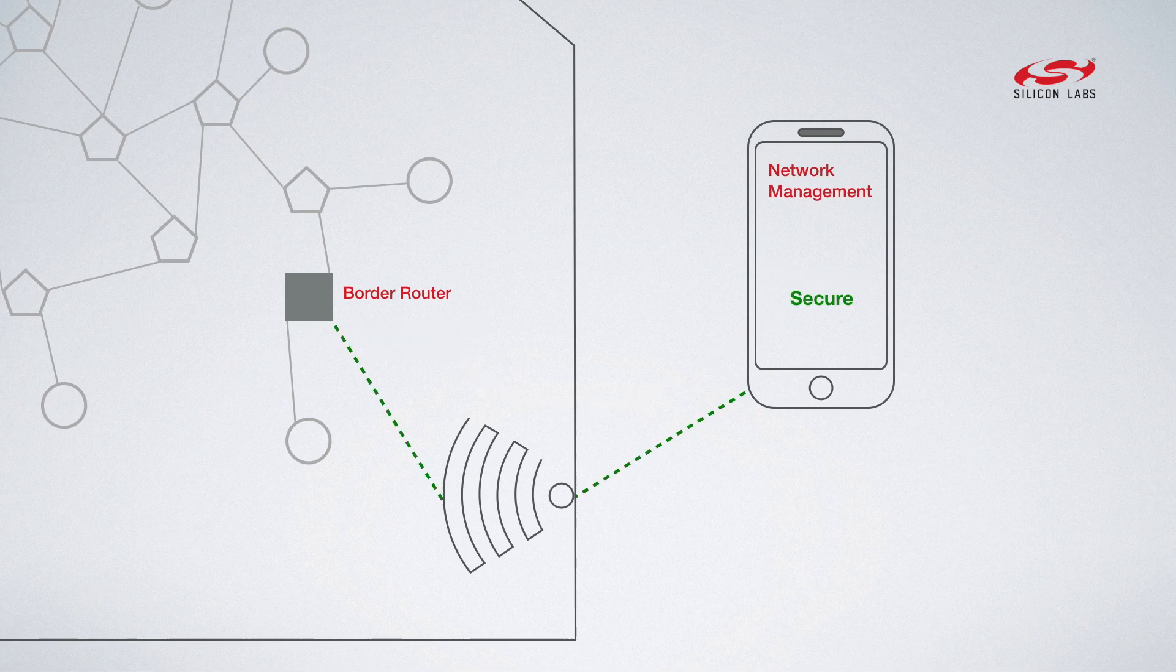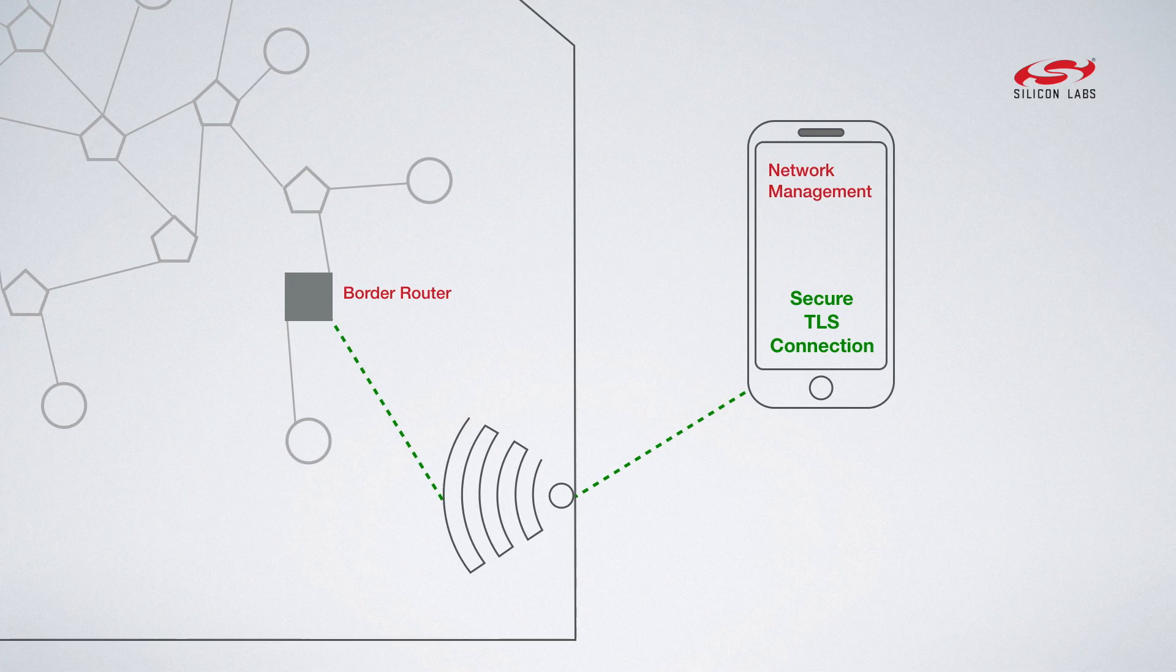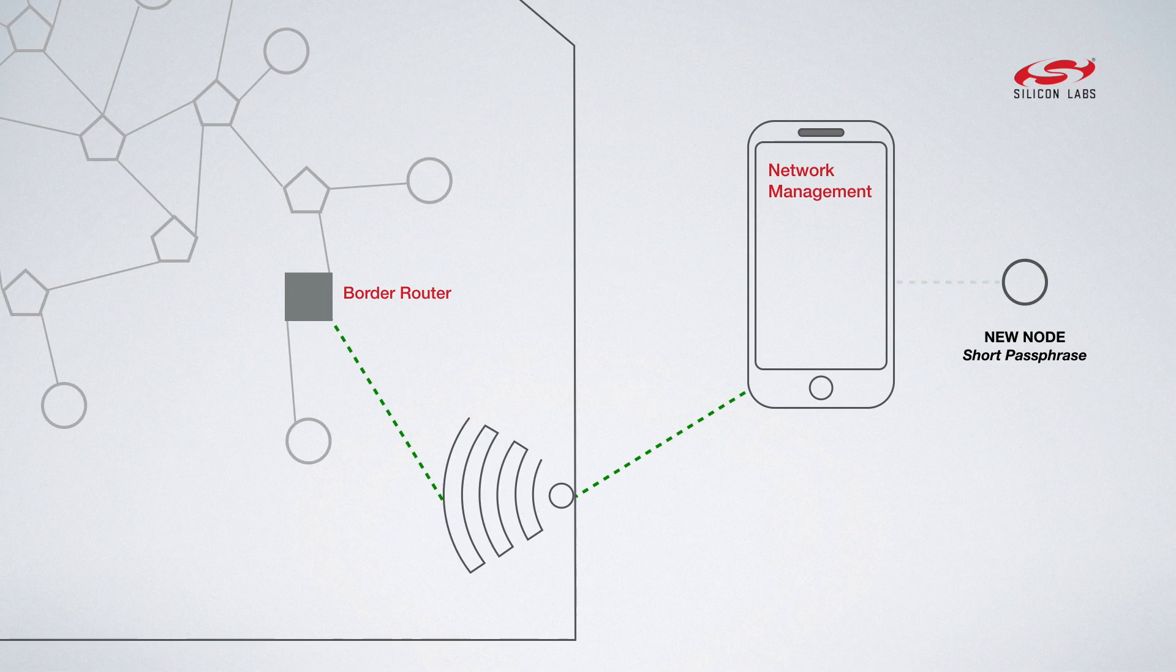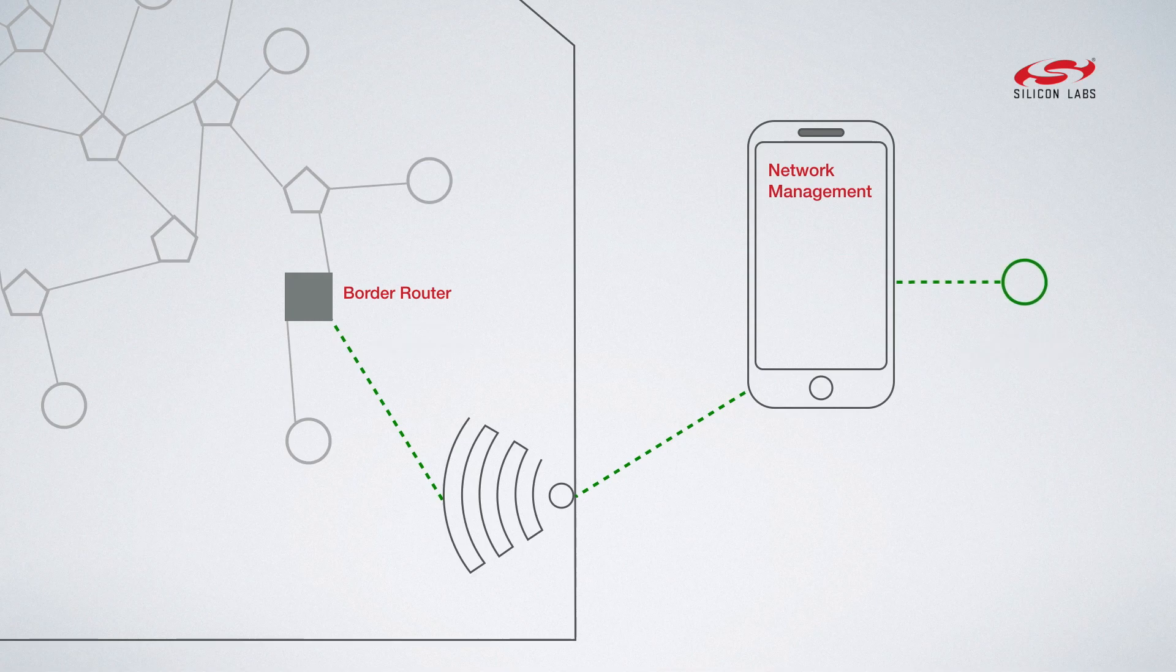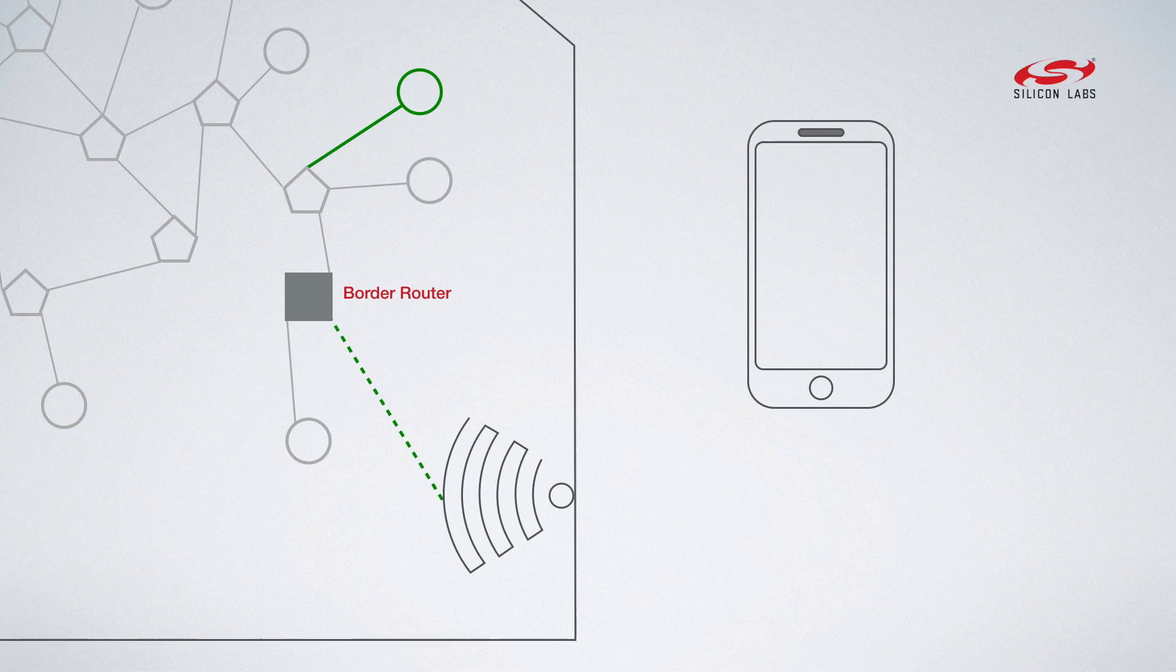Once a management application has been connected to the Thread network, new devices can be added to the network. Every Thread device has a commissioning passphrase assigned to it by the manufacturer. To add the device to the network, the user first gives that passphrase to the commissioning device, which then establishes a secure connection to the joining device and passes to it the network security material.